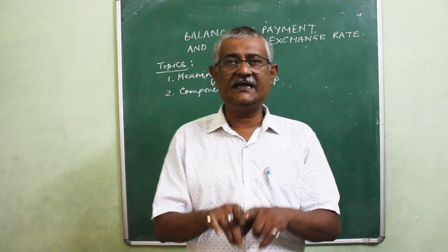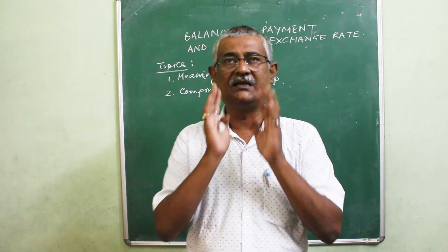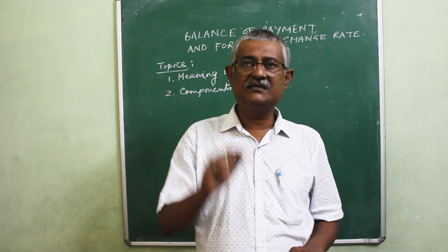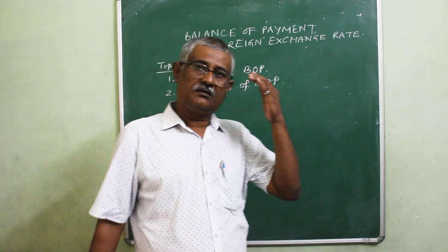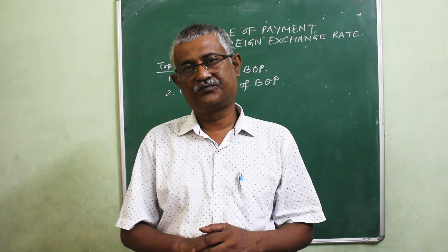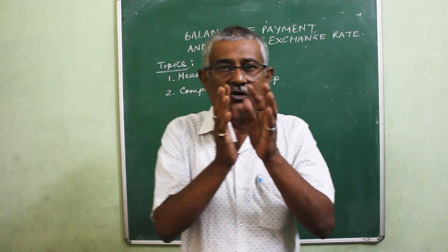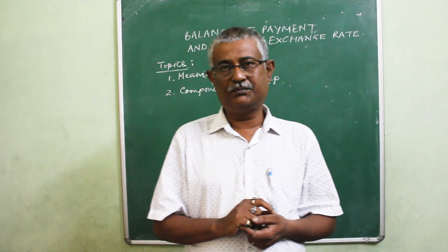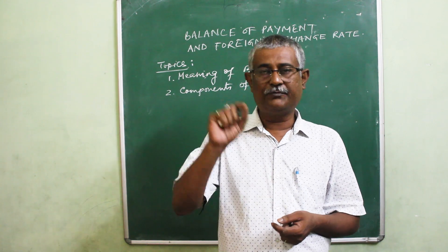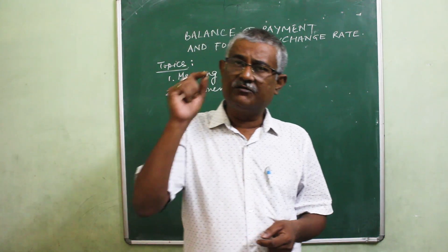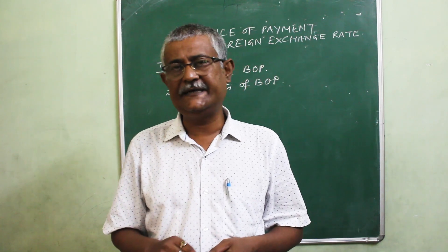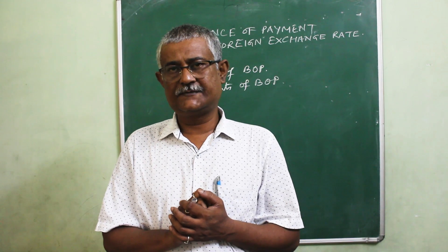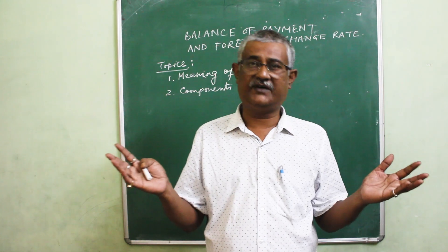Broadly, there are two components of balance of payment: number one is current account, and number two is capital account of balance of payment. Current account of balance of payment includes visible and invisible items of trade, unilateral transfers, and international incomes.